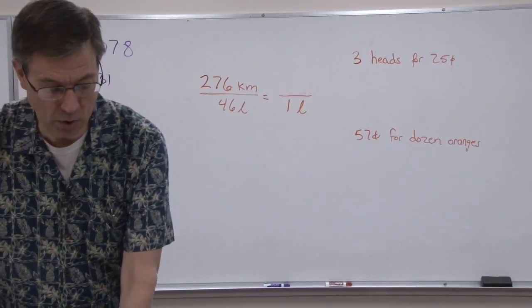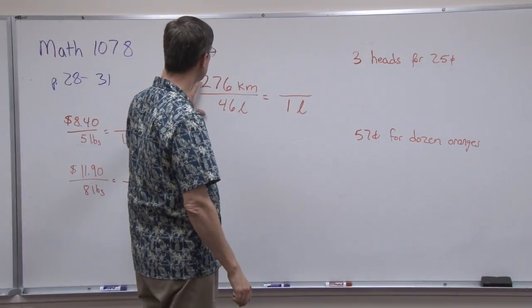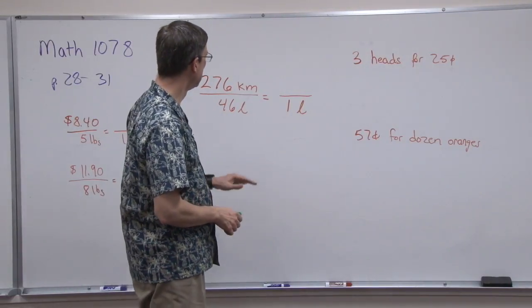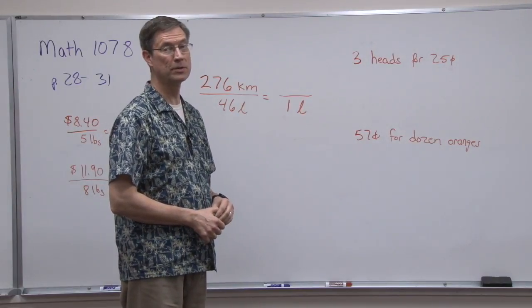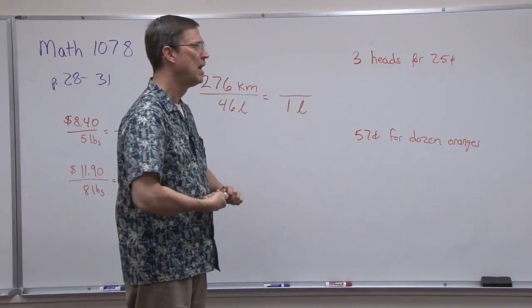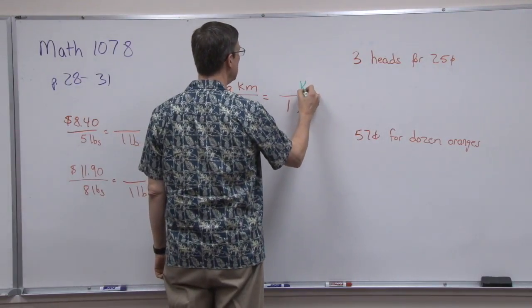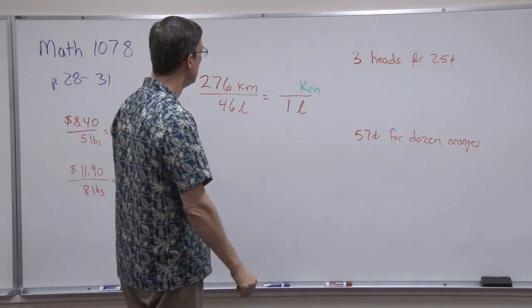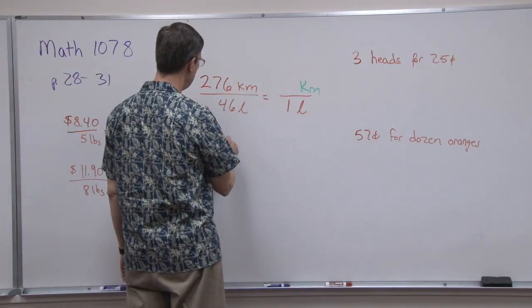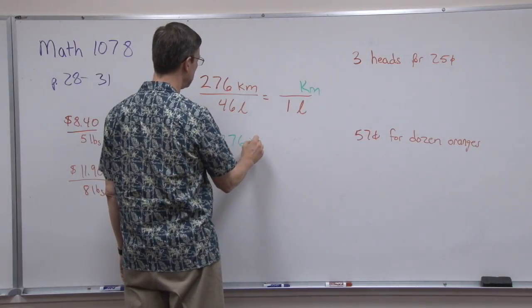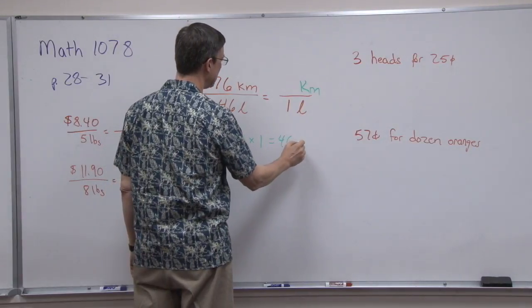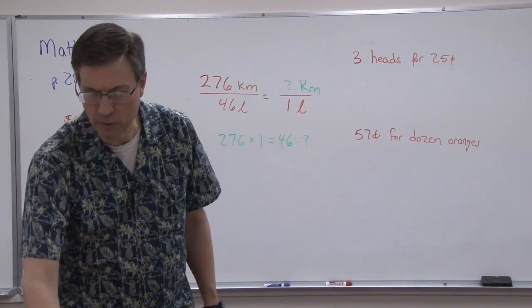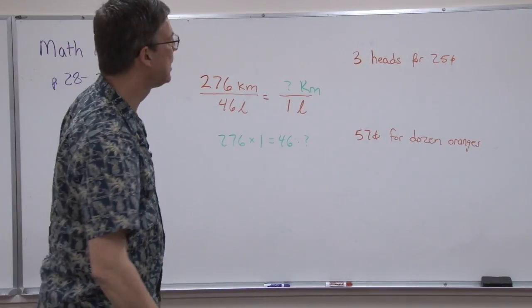I want to look at this problem. Let's say we're going 276 kilometers and it uses up 46 liters of gas to go those 276 kilometers. The question is, how many kilometers can I go per liter? So what we're going to do is cross multiply. I'm going to take 276 times 1 equals 46 times - I'm going to put X. X means we don't know what it is, we're solving for.